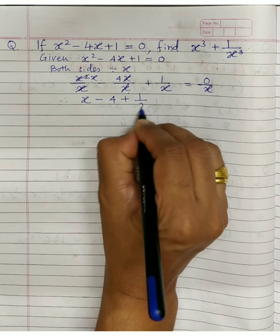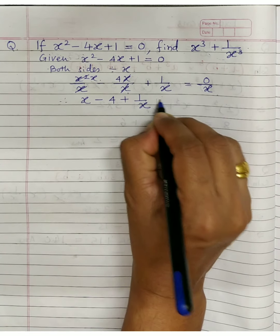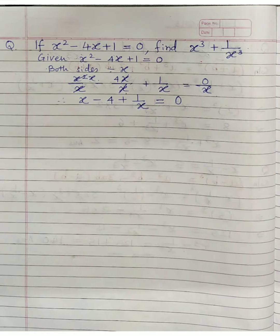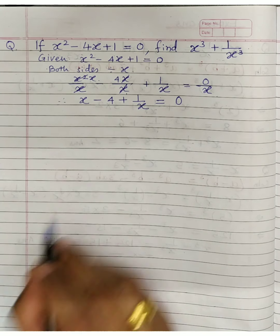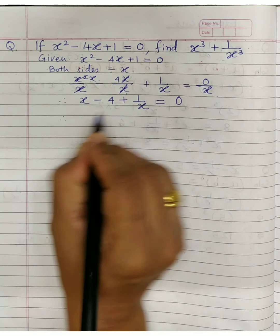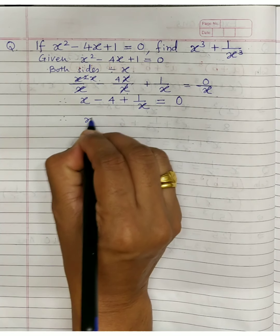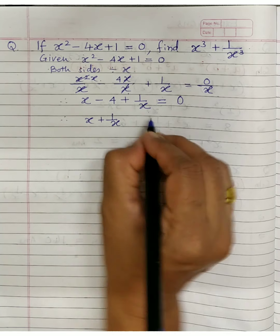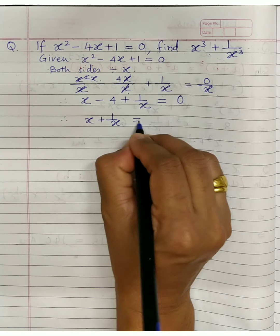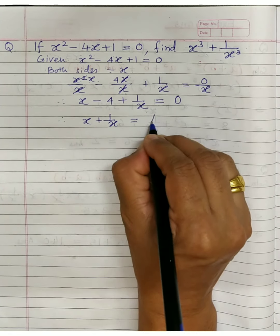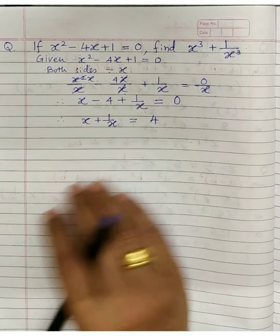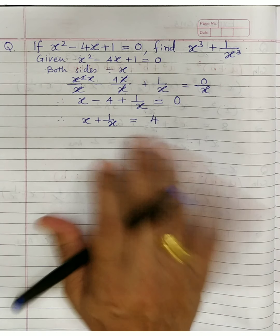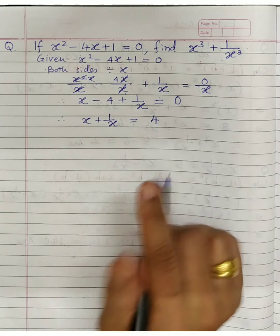So x plus 1 upon x minus 4 equals 0. Shifting minus 4 to the right hand side gives plus 4. Thus x plus 1 upon x equals 4.